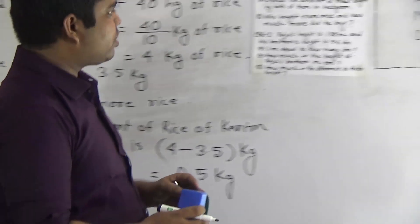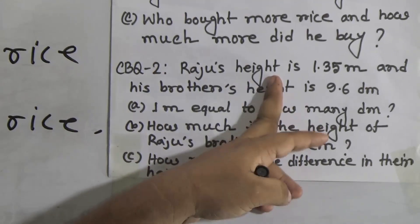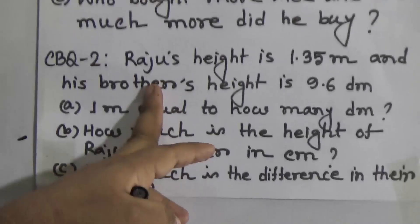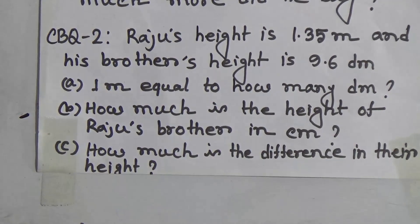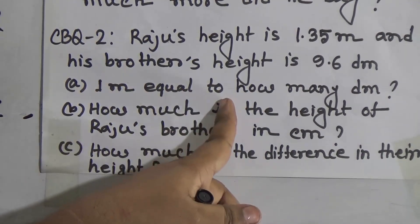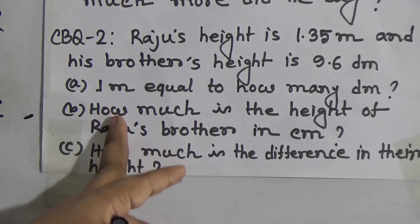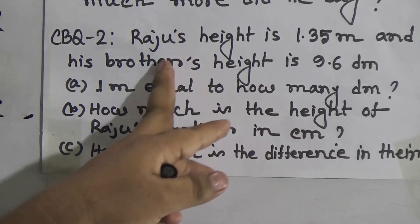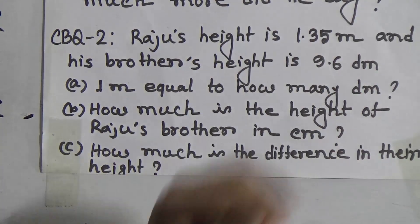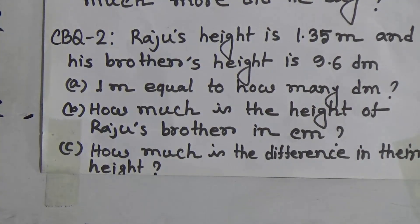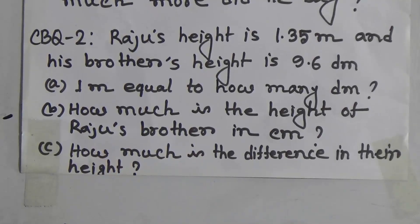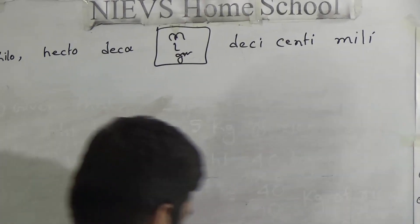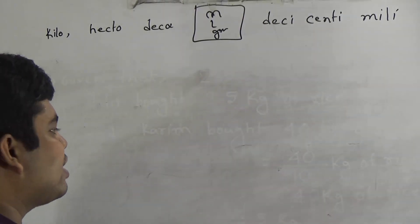Now we solve CBQ number 2. Raju's height is 1.35 meter and his brother's height is 9.6 decimeter. Part A: 1 meter equals how many decimeter? Part B: How much is the height of Raju's brother in centimeter? That means we convert the brother's height from decimeter into centimeter. Part C: How much is the difference in their heights? We need to find the difference between Raju's height and his brother's height.